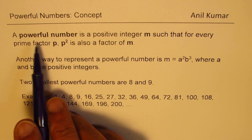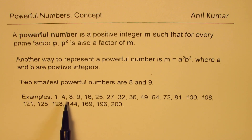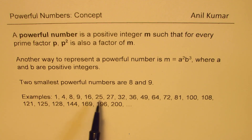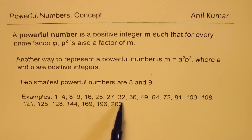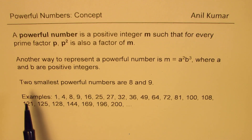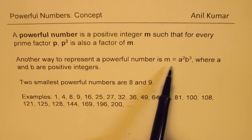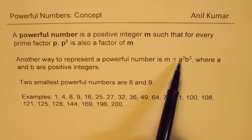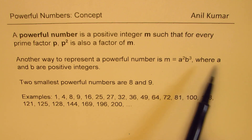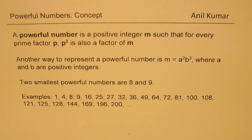To give you an example of powerful numbers, these are the examples of powerful numbers up to 200: 1, 4, 8, 9, 16, 25, 27, 32, and so on. Another way of looking at this definition is that a powerful number m can be equal to a squared times b cubed, where a and b are positive integers.